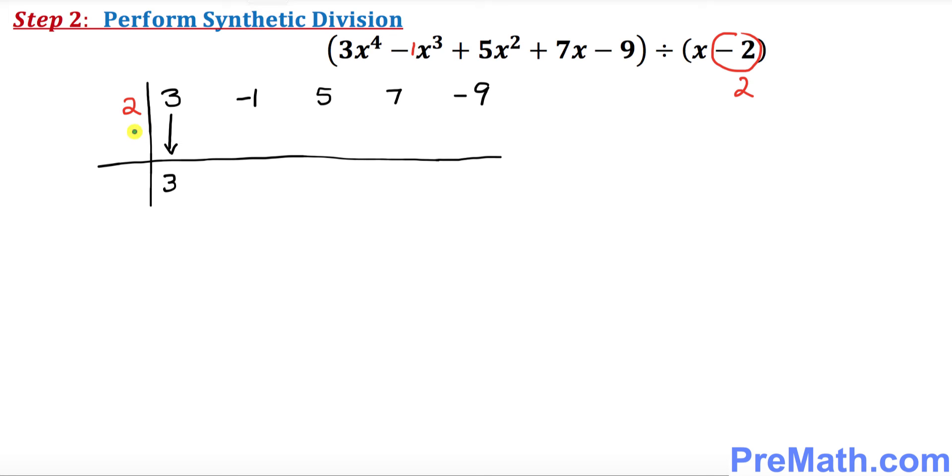So the next step is I want you to put 3, bring it down right here as it is. So the next thing is I want you to multiply 2 times 3. That's going to give you 6. Negative 1 and 6 give you 5. Multiply 2 times 5. That's going to give you 10. 10 plus 5 is going to give you 15.